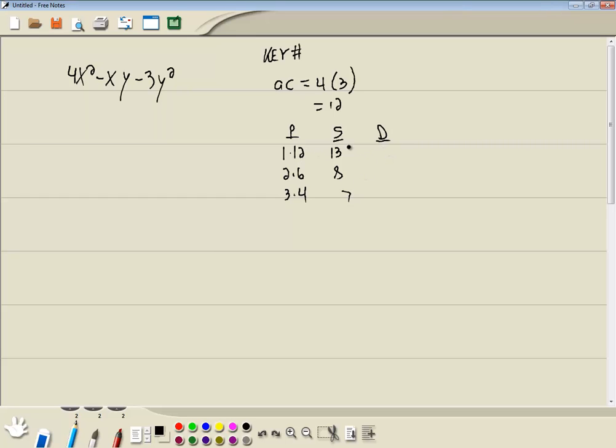Subtract them. D for difference. 12 minus 1 is 11, 6 minus 2 is 4, 4 minus 3 is 1. Smaller from larger. Now the number we're looking for is a number in our middle term, which there's no number here, so it's by default 1, which is right here. So we're going to use 3 and 4.